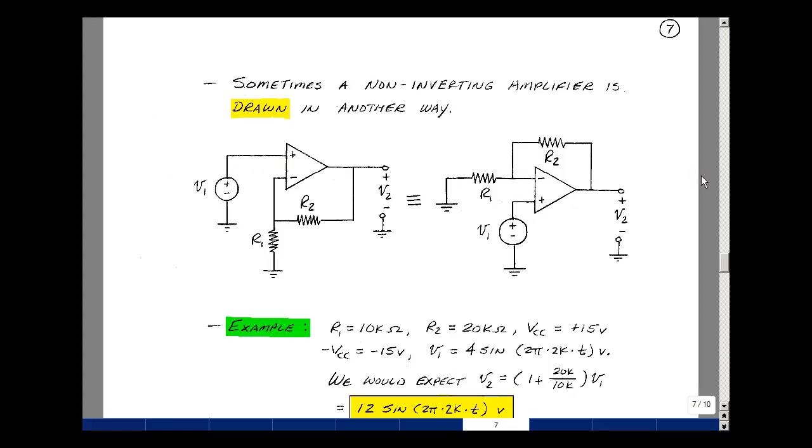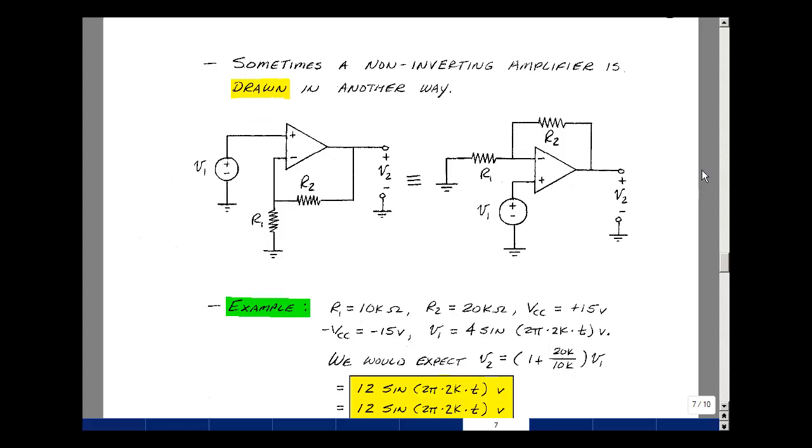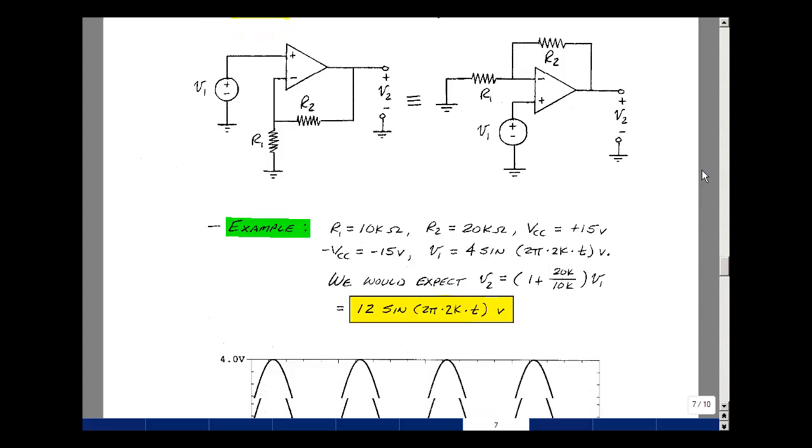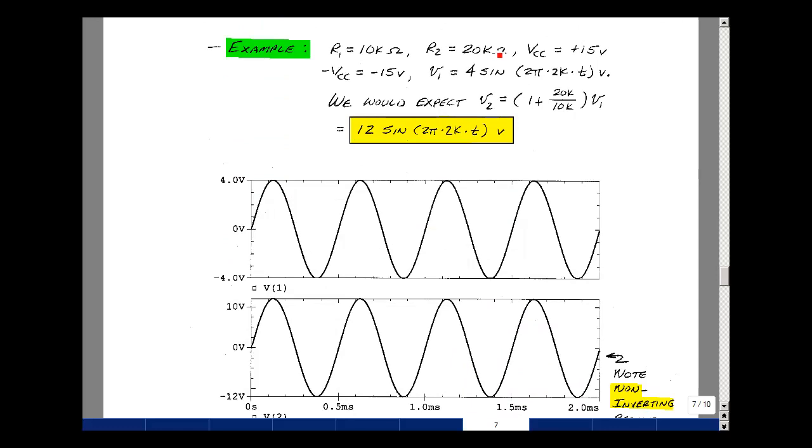Let's put some numbers in and see what happens with our output given an input. Suppose that R1 is 10k, R2 is 20k. We're using plus and minus 15 volt power supplies. And now our input is a 4 volt sine wave at 2 kilohertz. I would expect the output to be 1 plus 20k over 10k times my input. It's going to be 3 times this, which will change the amplitude to 12. We keep the frequency at 2 kilohertz.